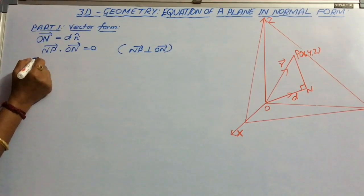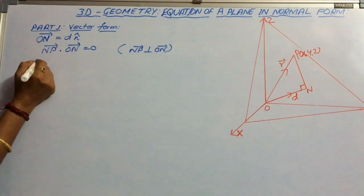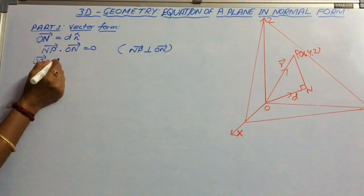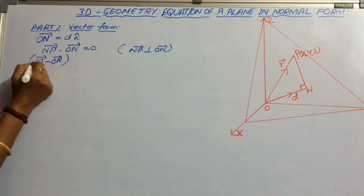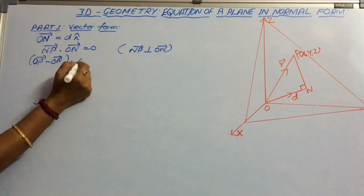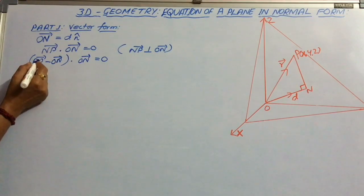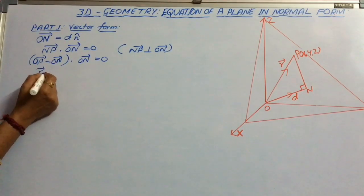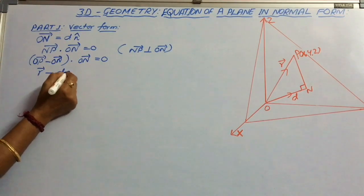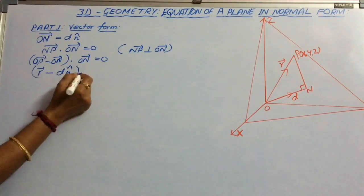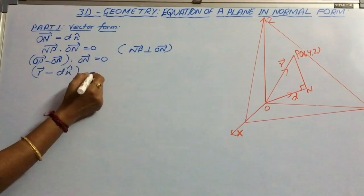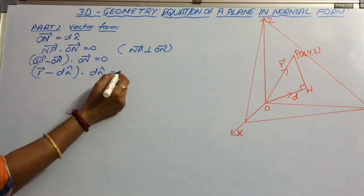But vector NP can be written as OP minus ON, dot product with ON equal to 0. But OP is vector r, ON is D n cap, dot product with vector ON, that is D n cap, equal to 0.